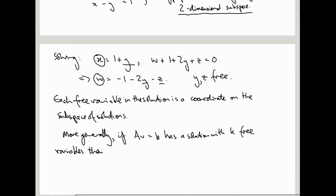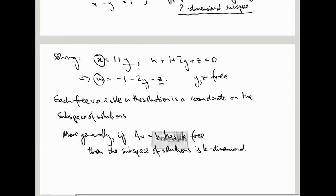then the subspace of solutions is k-dimensional. Maybe to make this sentence less confusing than saying a solution with k free variables, let me just say has k free variables in its general solution. In other words, when you solve it you get k free variables, that means the subspace of solutions is k-dimensional.